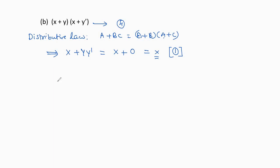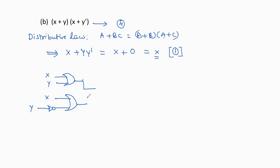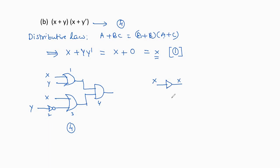The logic diagram for the given expression needs two OR gates, one NOT gate for y', and one AND gate — totaling 4 logic gates. For the simplified Boolean expression x, it again requires only one buffer, which is only 1 logic gate. So we can easily understand that the simplified expression is better than the given Boolean expression.